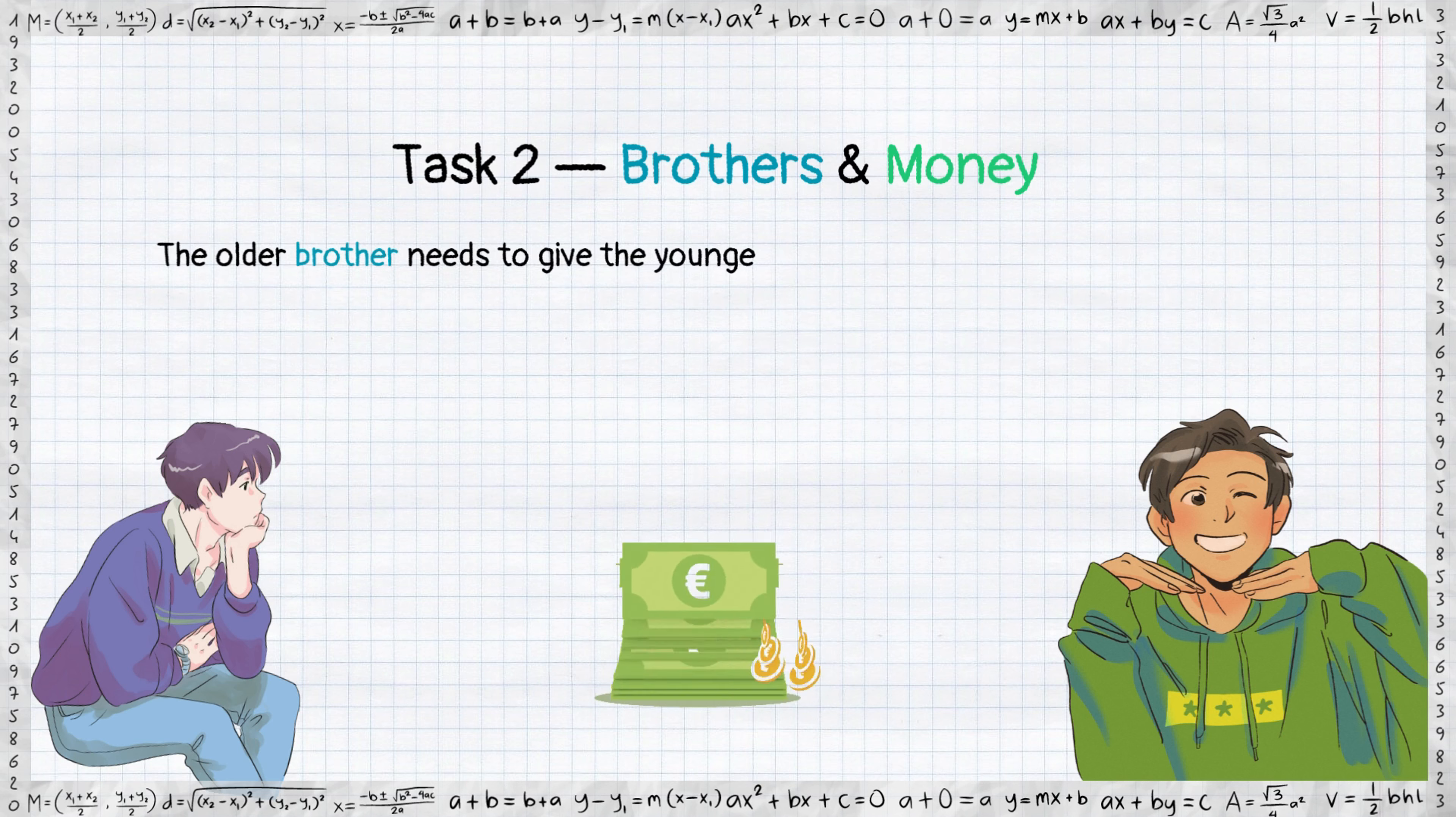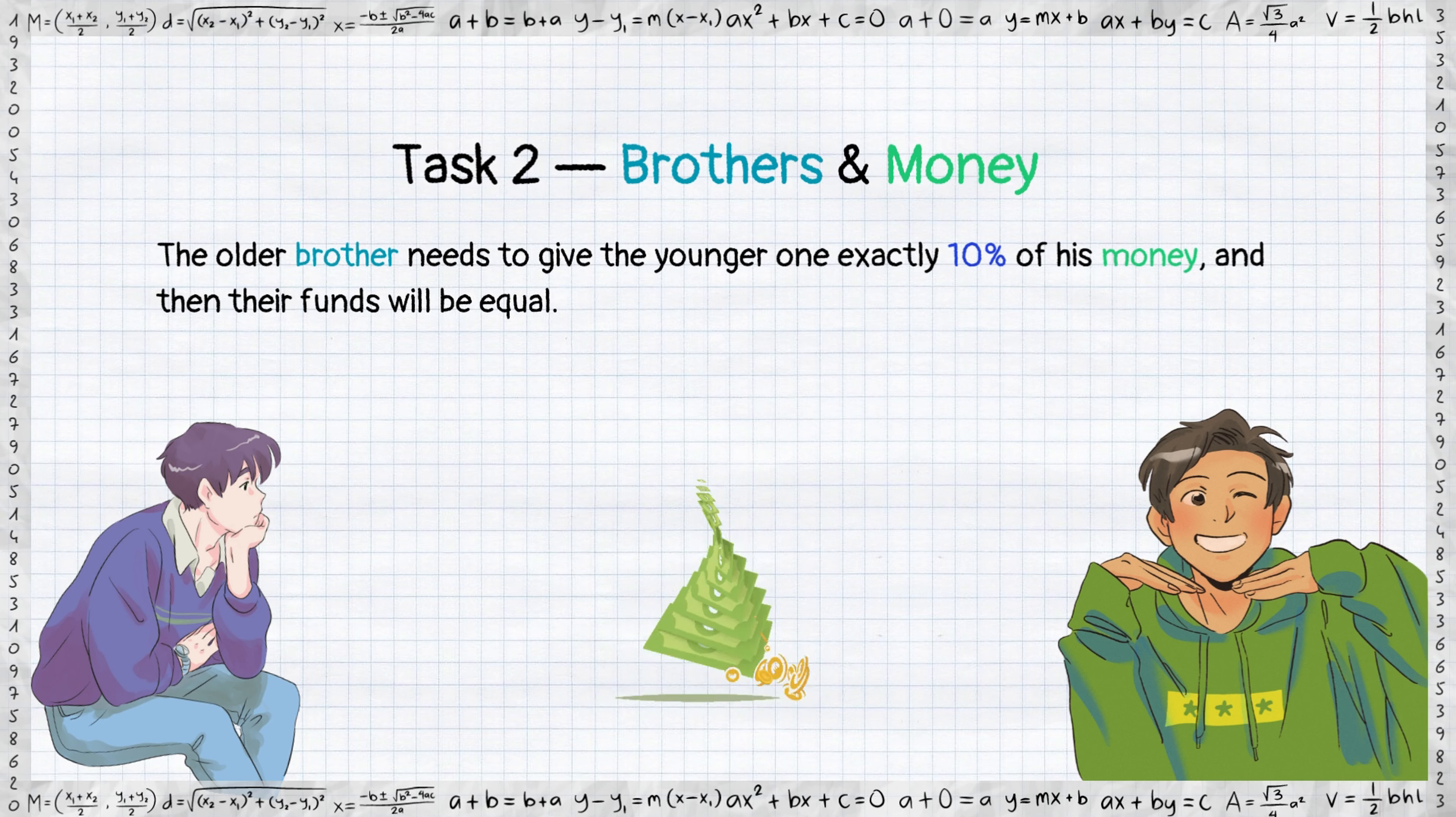The older brother needs to give the younger one exactly 10% of his money, and then their funds will be equal.